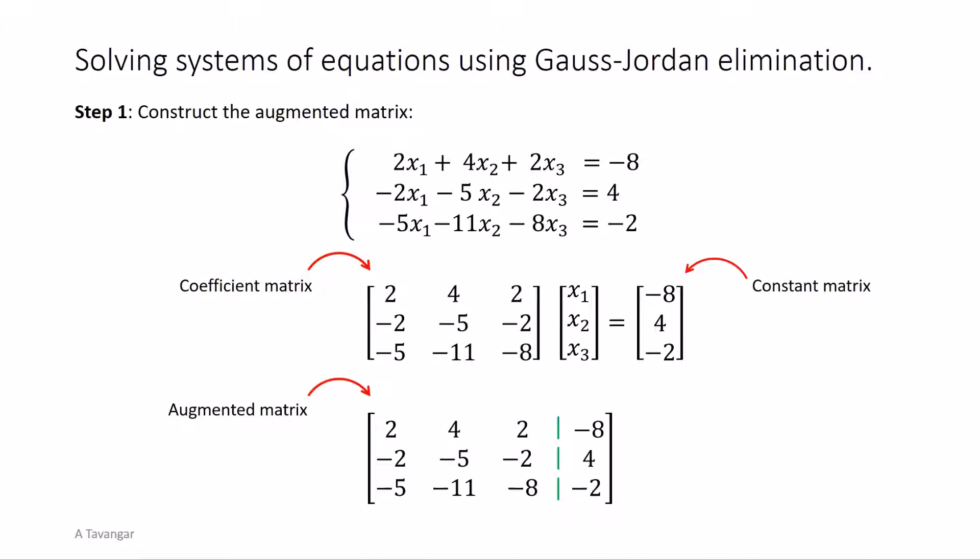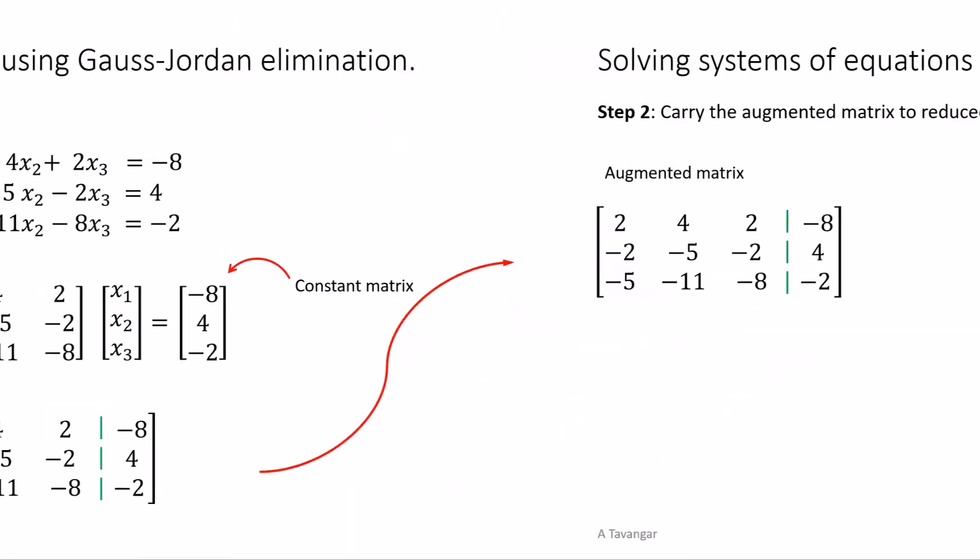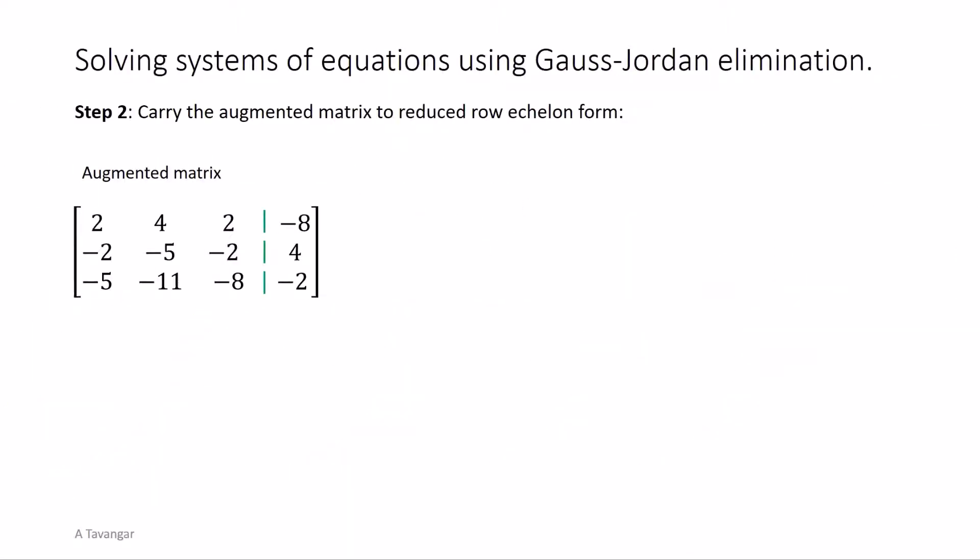The coefficients from one equation of the system create one row of the augmented matrix. Now through a systematic procedure of row operations we will simplify the augmented matrix and carry it to row echelon and reduced row echelon form and find the solution of the system. Note that elementary row operations used on an augmented matrix will not change a solution to the corresponding system of equations.